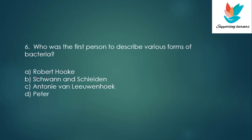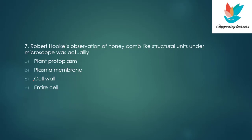Question 6: Who was the first person to describe the various forms of bacteria? The answer is Anton van Leeuwenhoek. Question 7: Robert Hooke's observation of honeycomb-like structural units under a microscope was actually — A. Plant protoplasm, B. Plasma membrane, C. Cell wall, D. Entire cell. Robert Hooke discovered only the dead cells, so the answer is C — cell wall.